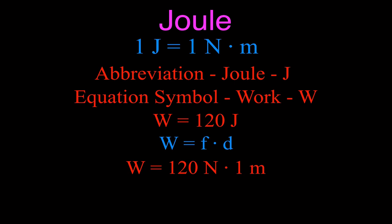There are infinite ways to do 120 joules of work. One way is to apply a force of 120 newtons over a distance of one meter — 120 times 1 equals 120 joules. Another possibility is applying a force of 10 newtons over a distance of 12 meters, because 10 times 12 is also 120. That's how you calculate work: force times the distance — not force over distance, since it's a newton-meter, not a newton per meter.